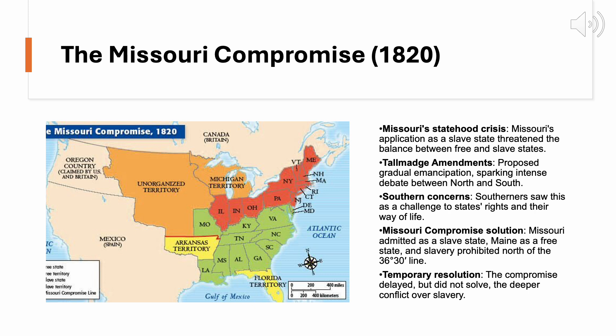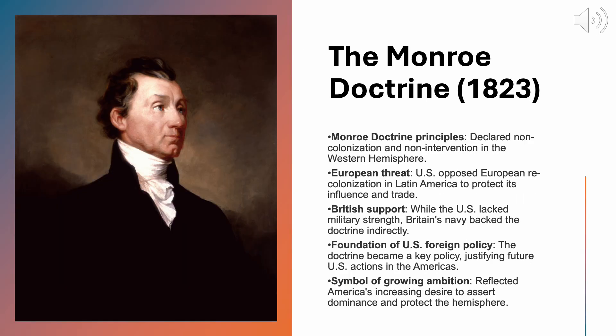The ferocity of the debate was shocking to many, with some politicians openly discussing the possibility of disunion and civil war if a compromise could not be reached. The crisis was ultimately resolved by the Missouri Compromise, brokered by Henry Clay. Missouri was admitted as a slave state, but to maintain the balance, Maine was admitted as a free state. More significantly, the Compromise established the principle that slavery would be prohibited in all remaining territories of the Louisiana Purchase north of the 36th parallel line.